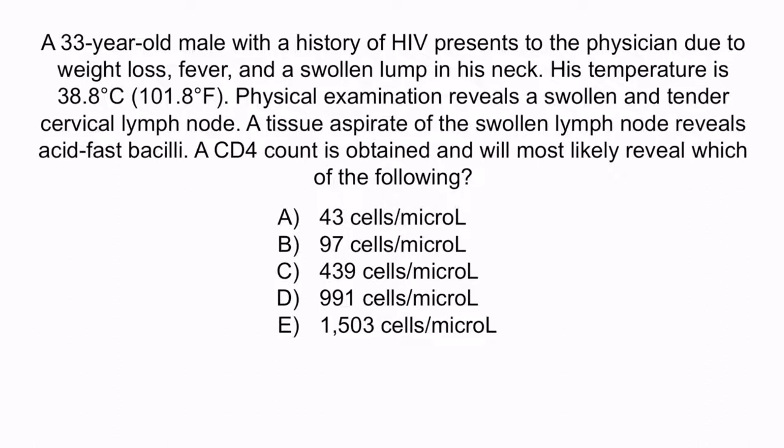A: 43 cells per microliter. B: 97 cells per microliter. C: 439 cells per microliter. D: 991 cells per microliter. Or E: 1,503 cells per microliter.